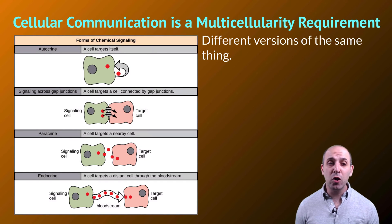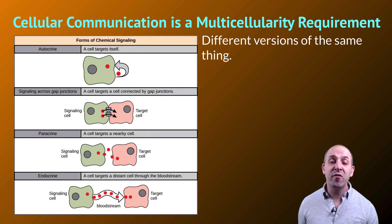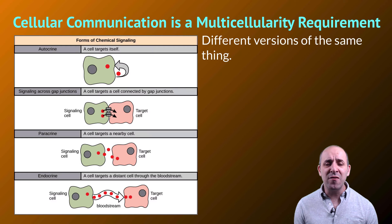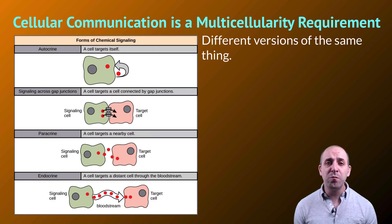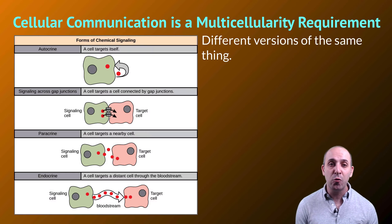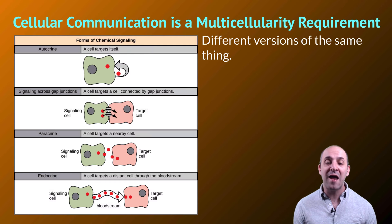Cellular communication is absolutely a requirement for multicellular organisms. Multicellular organisms have a huge diversity of different types of cellular communication pathways, some of which we've already seen in our previous discussion of the immune system. We categorize these things based on the targets of the cellular communication and how the cells are accomplishing that communication, but what's more important is for you to understand that these are all different versions of the same thing. In each case, the cell is making a chemical message which it exchanges with other cells — or possibly with itself — in order to accomplish some sort of cellular response. This is the universality of cellular communication.